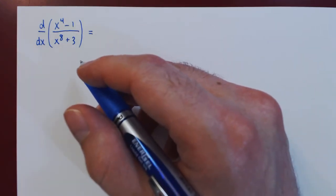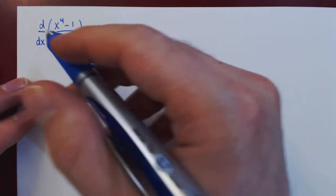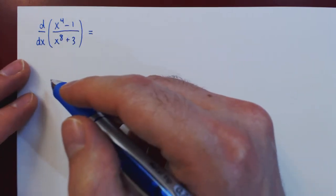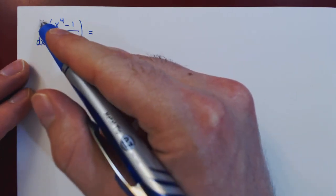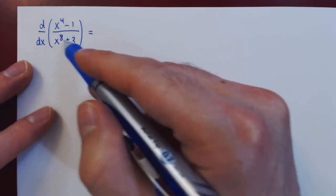Okay, so in this video, we want to give an example of the quotient rule of differentiation. So we want to find a derivative with respect to x of the following quotient.